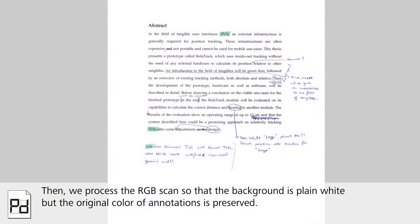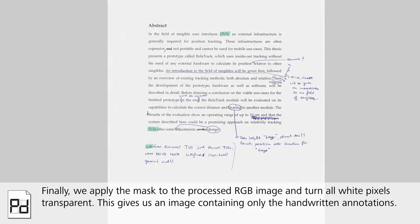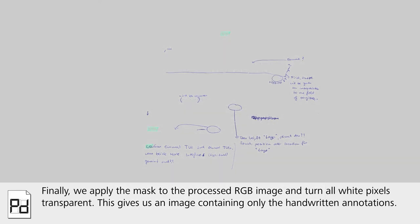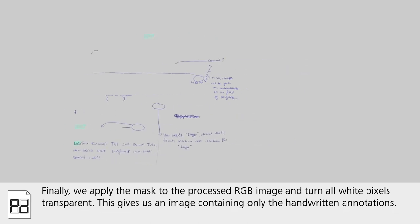Then we process the RGB scan so that the background is plain white but the original color of annotations is preserved. Finally, we apply the mask to the processed RGB image and turn all white pixels transparent. This gives us an image containing only the handwritten annotations.